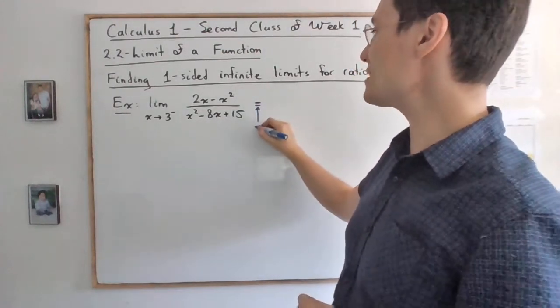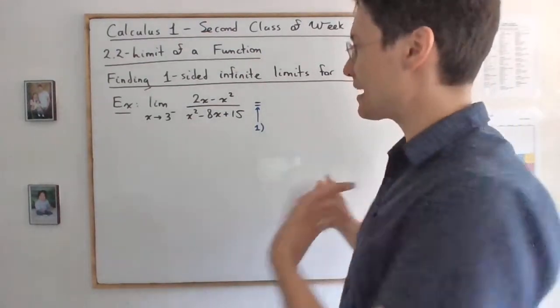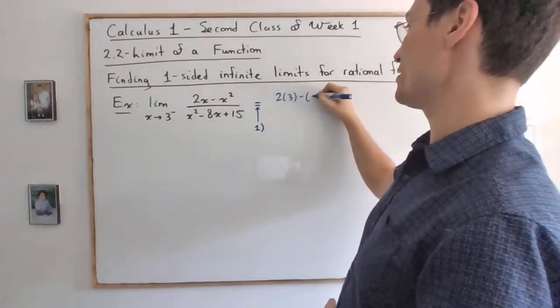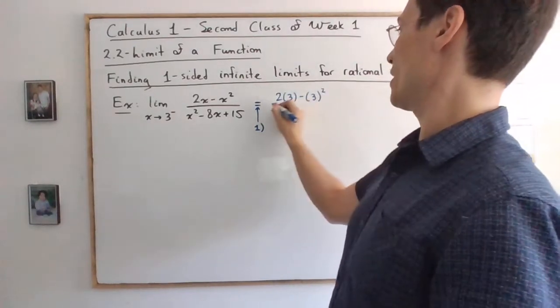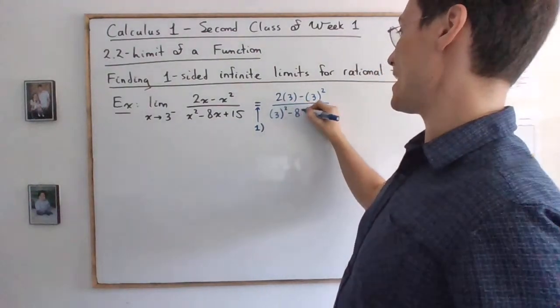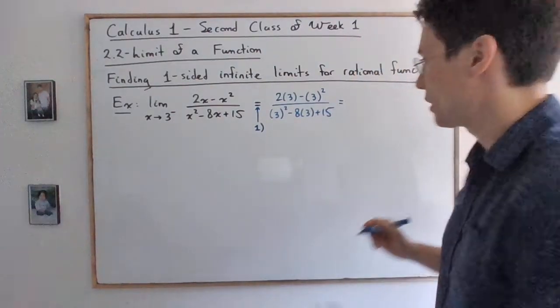So here, we're doing step number one. So to be very specific, what I replace by 3 is x. So what we have is 2 times 3 minus 3 squared over 3 squared minus 8 times 3 plus 15. And then you grind some coffee.